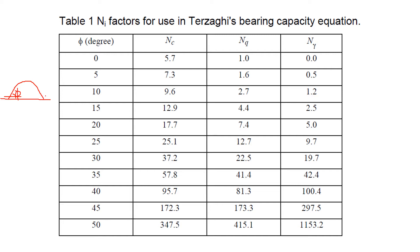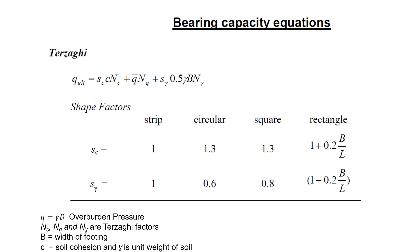In cohesive soil, meaning clay, phi may be up to zero. In sandy soil, phi has some positive value. Nc, Nq, and N_gamma are factors depending upon phi, and these factors are given by Terzaghi. The next parameter is q-bar, the overburden pressure, already discussed in the previous example. Gamma is the unit weight of the soil and b is the width of the footing.